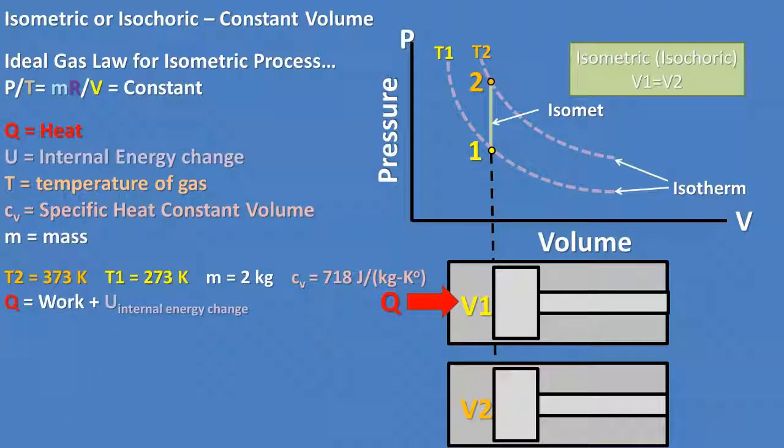Now let's do an example problem to find the total heat added, or the total internal energy change, of the system. The total heat added or removed in the system is equal to the work plus the internal energy change. Being work equals zero due to no movement, the total heat added equals the total internal energy change.